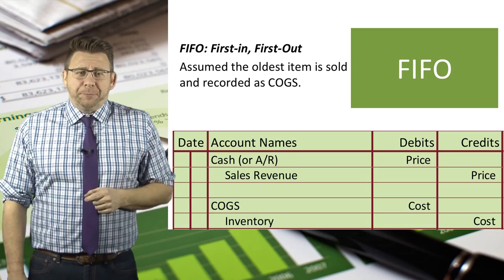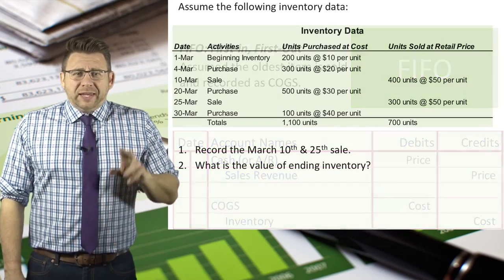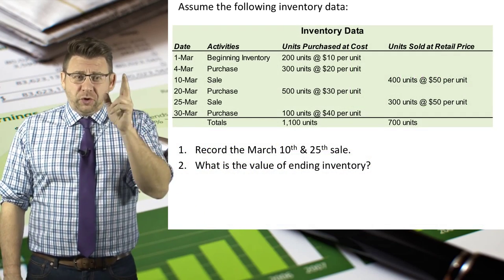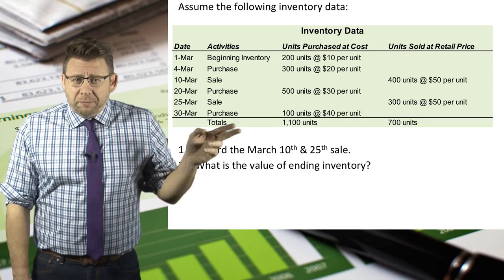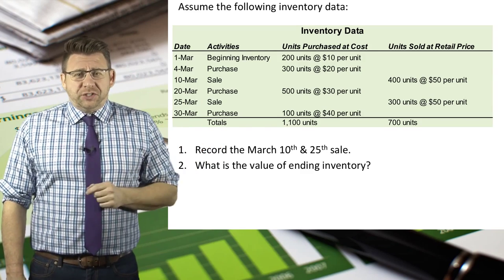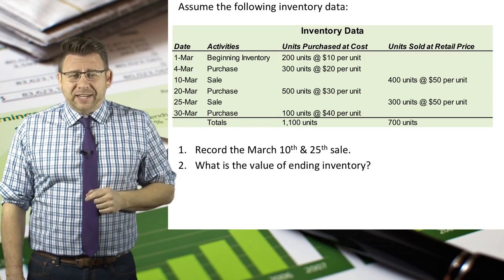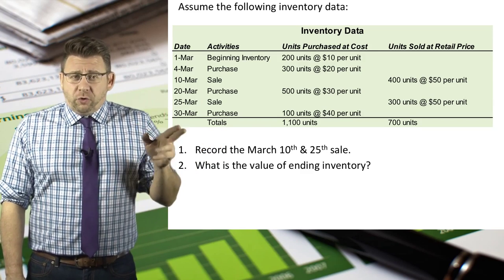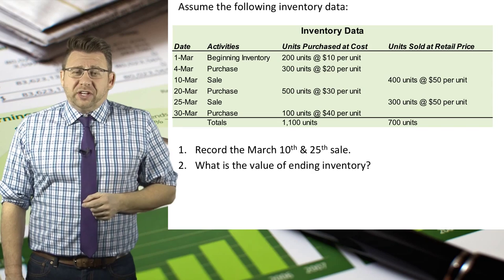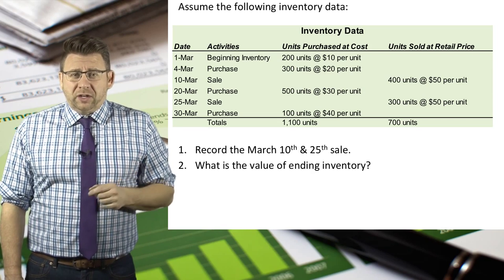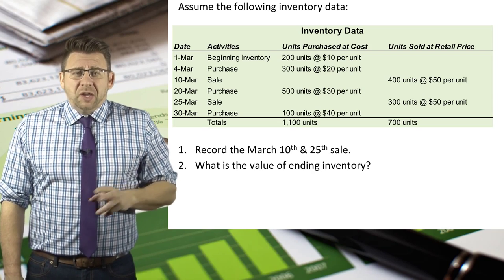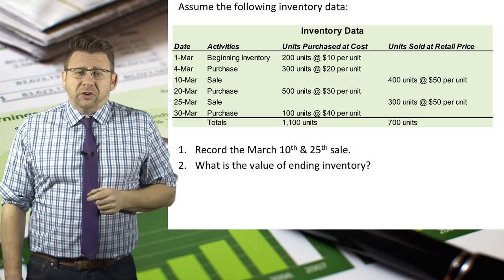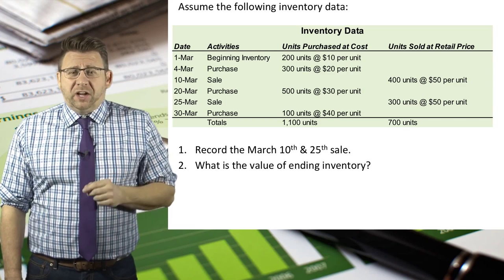Let's look at an example. Let's assume the following inventory data. March 1, beginning inventory is 200 units at $10 each. March 4, we purchased an additional 300 units at $20 each. March 10, we sold 400 units at $50 each.